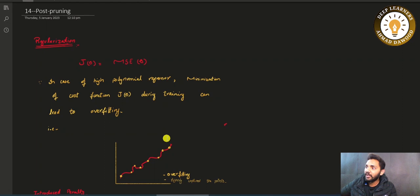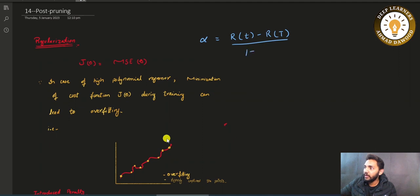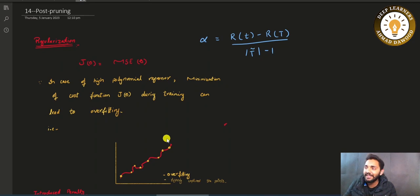Alpha has this type of formulation: r of small t minus r of capital T, divided by T-bar minus 1. We are already familiar with that formulation. How it is derived, we will see in this session.